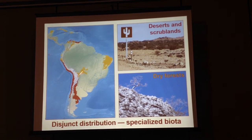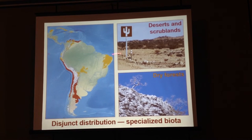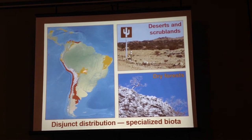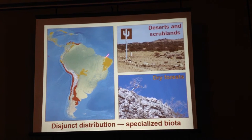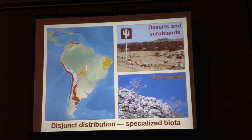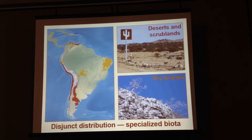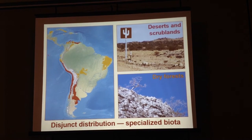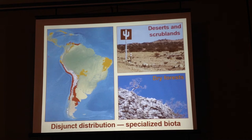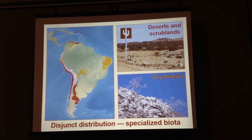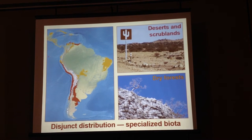First, they have a disjunct distribution, meaning that species located in these environments are trapped, because the surrounding environment might not be suitable for them. Also, these environments have specialized biotas, with many kinds of special adaptations to cope with the harsh conditions, so it might be more difficult for them to adapt to new conditions.